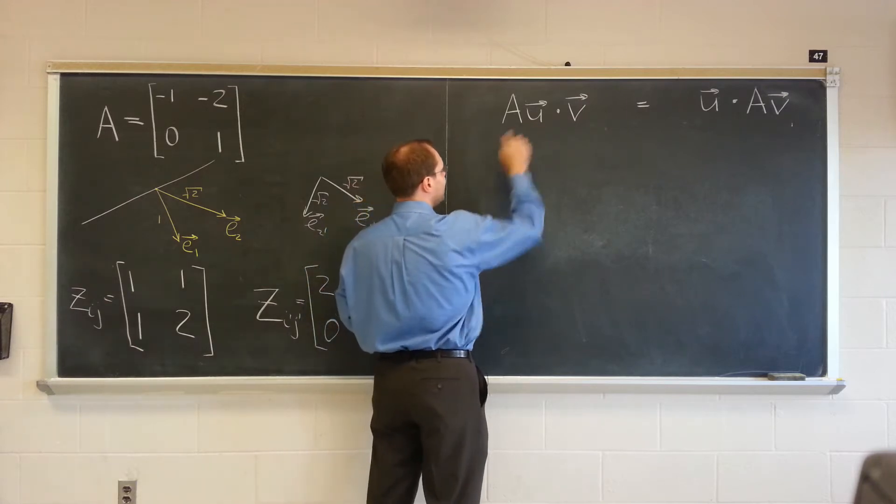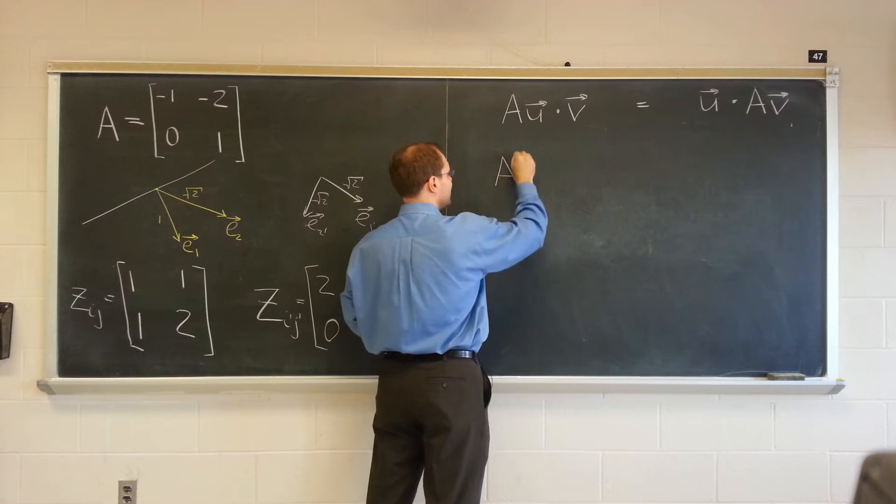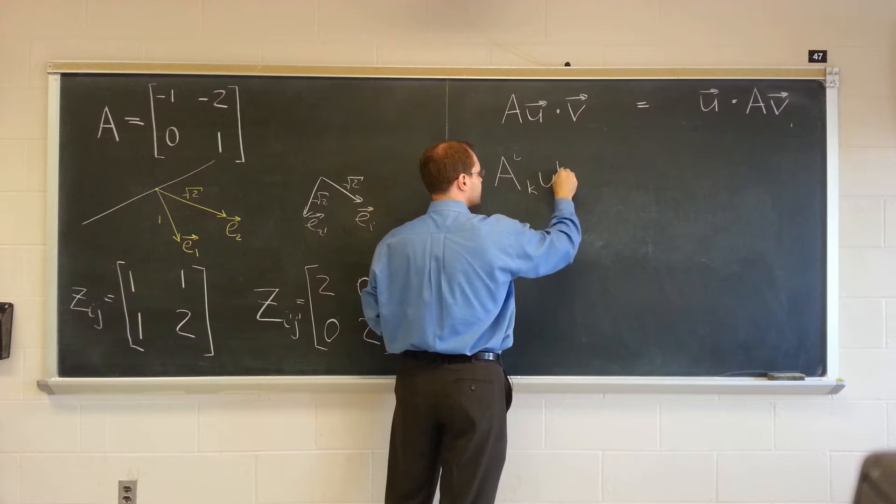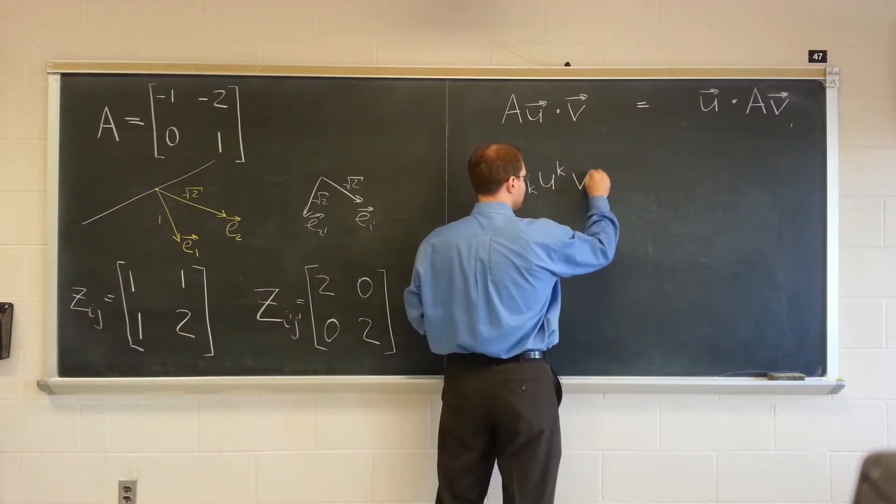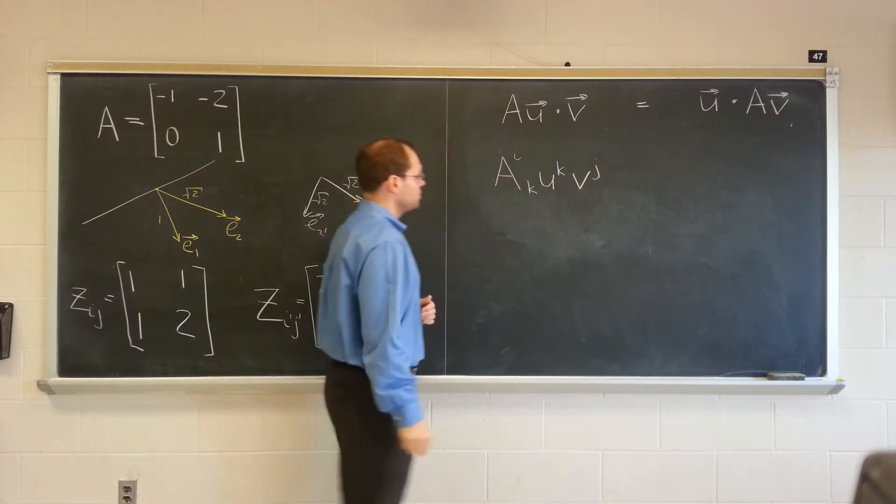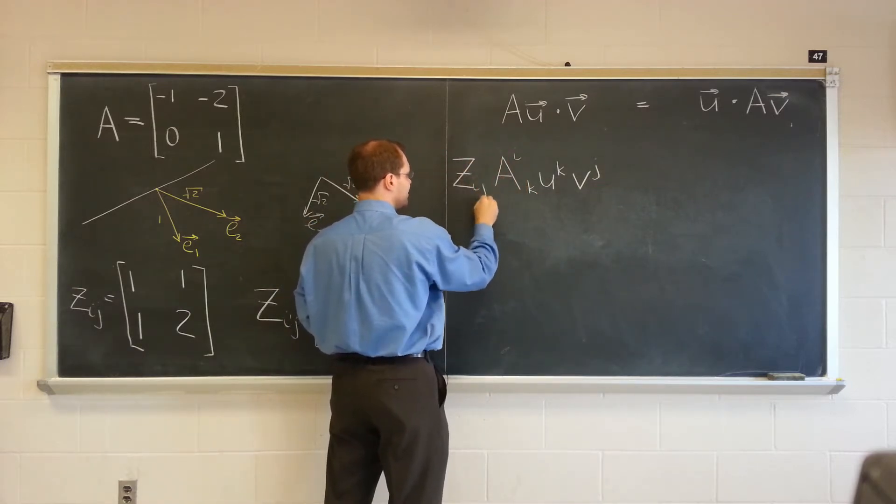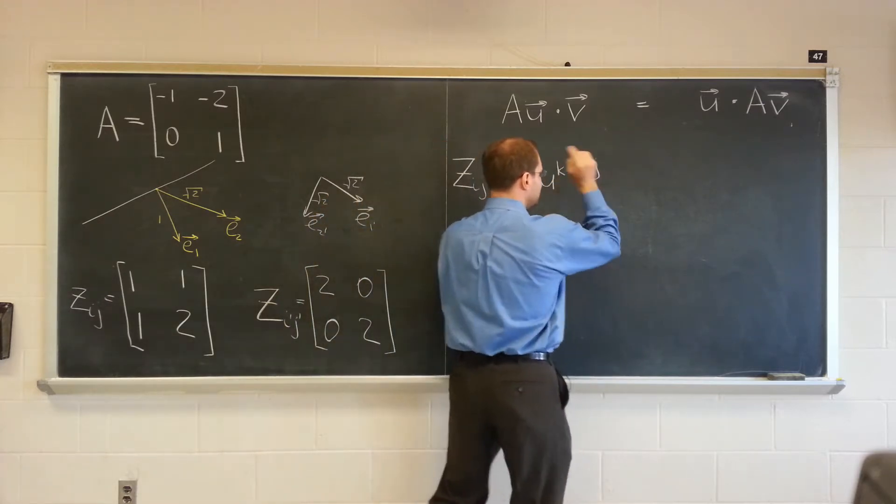And let's discover for ourselves what property of the matrix representing the linear transformation A can we expect. Alright, so here we have AU. In tensor notation it would be written as A_ik u_k. And we're dotting it with v_j which would be written as Z_ij because that's what the inner product is. It's Z_ij effective u_i v_j.